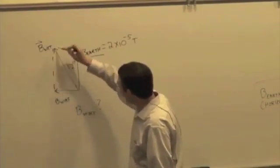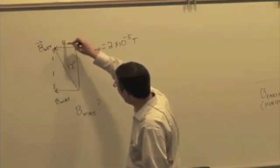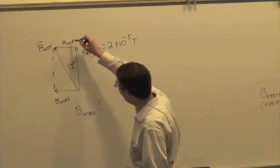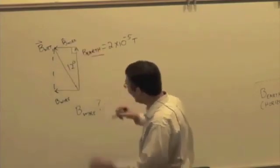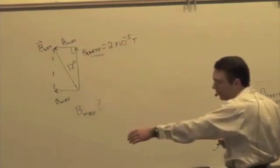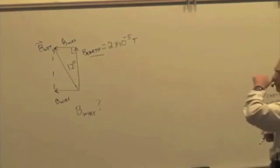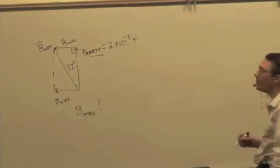And this is a right triangle. So that component, B of the wire, is perpendicular to B of the Earth because we've nicely laid the wire out running north-south to give us a magnetic field perpendicular to the magnetic field of the Earth.